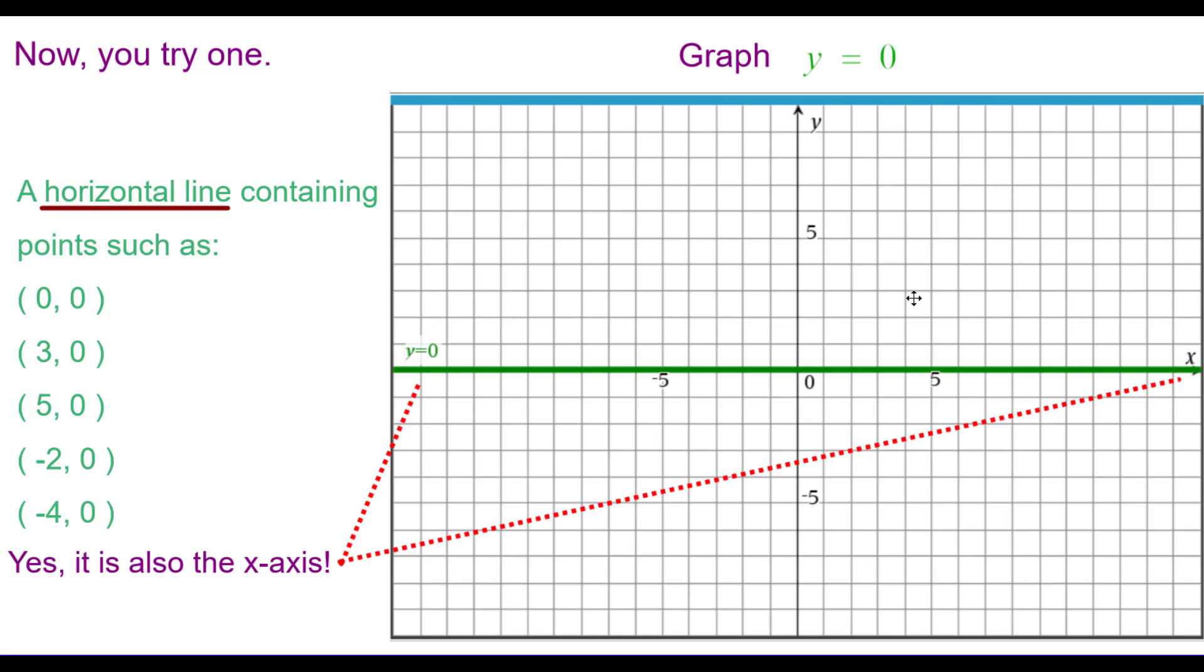Here's the graph of y equals 0. It is a horizontal line containing these points and other ones. And yes, it is also the x-axis. In fact, the x-axis has an equation y equals 0, and that's a good thing to know.